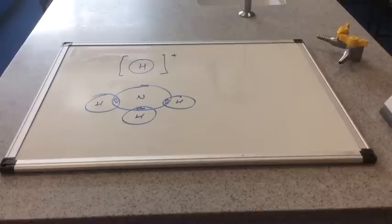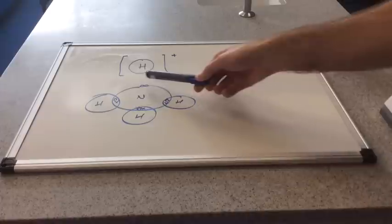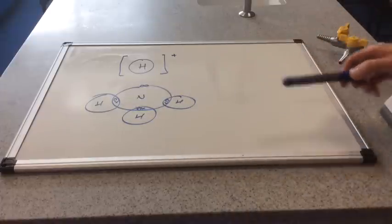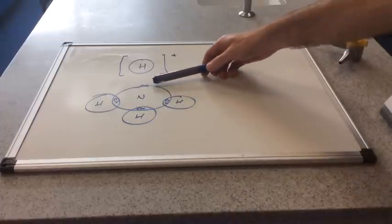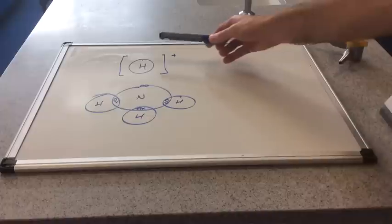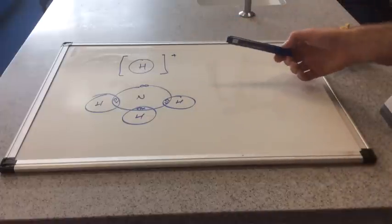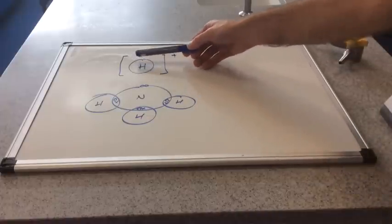The ammonium ion is formed between the ammonia molecule - there's the dot and cross diagram for the ammonia molecule with the lone pair of electrons - and the hydrogen ion, the H plus ion, which has no electrons at all.